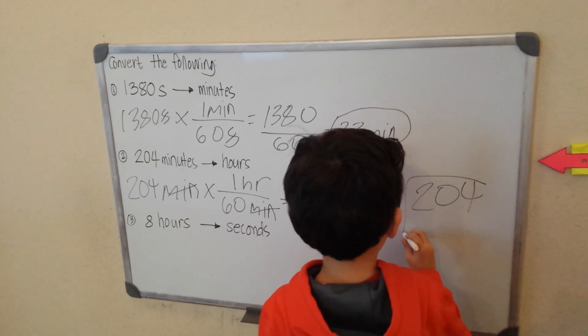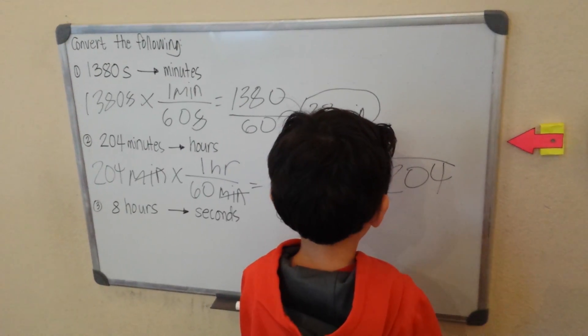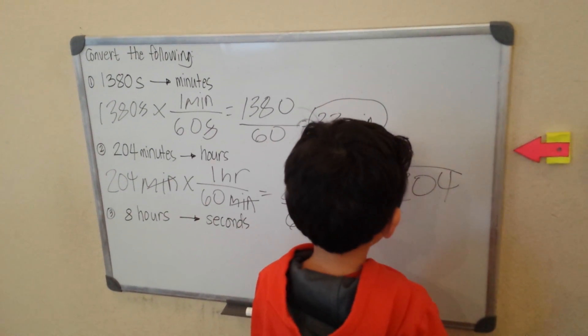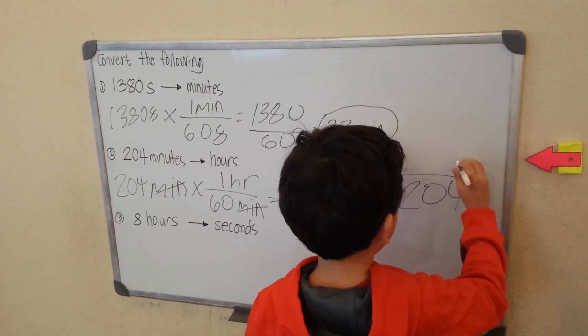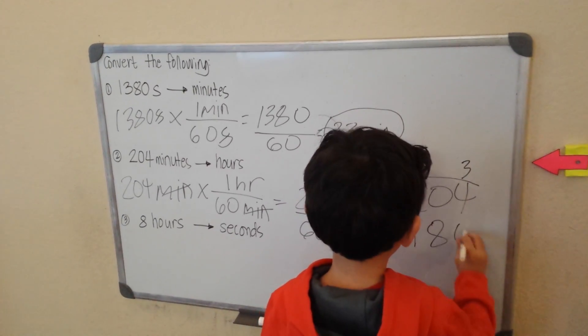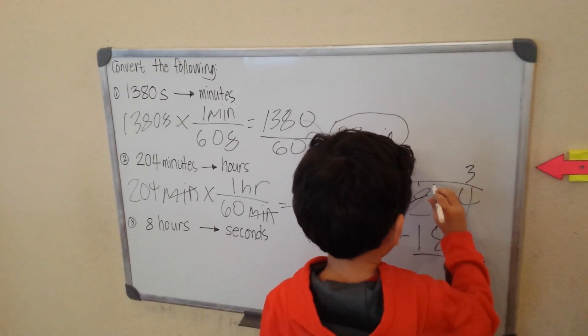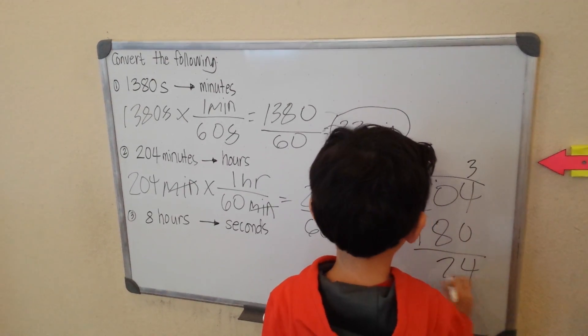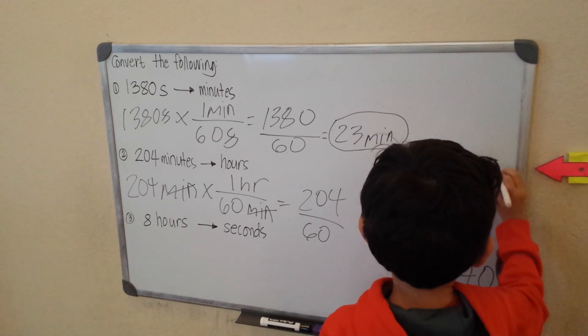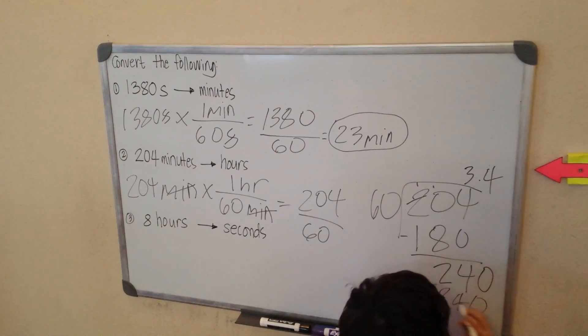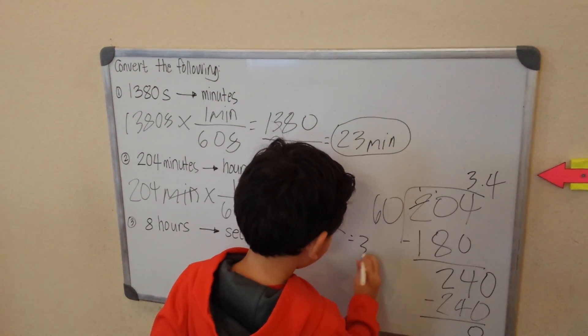204 divided by 60. Let me count. 60, 120, 180, 240. We cannot use 240. So, let's use three. Three times 60 is 180. 10 minus 8, that would be 2. And 1 minus 1 would be 0. We can put a point here that is a 0 here. That would be 4. 4 times 60 is 240. 240 minus 240 is 0. So, our answer must be 3.4.